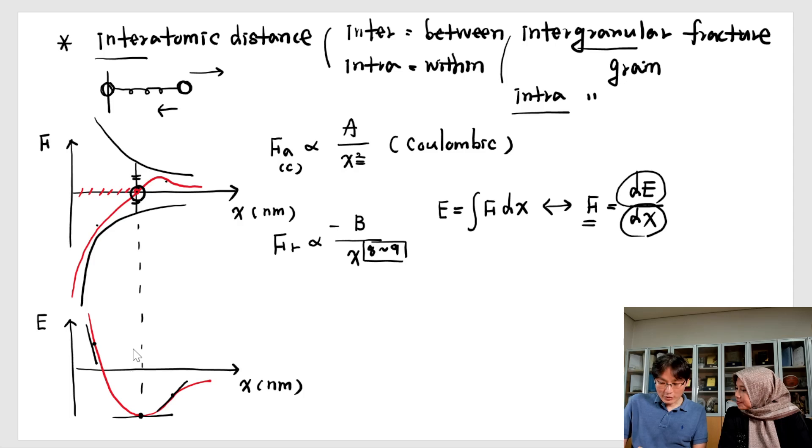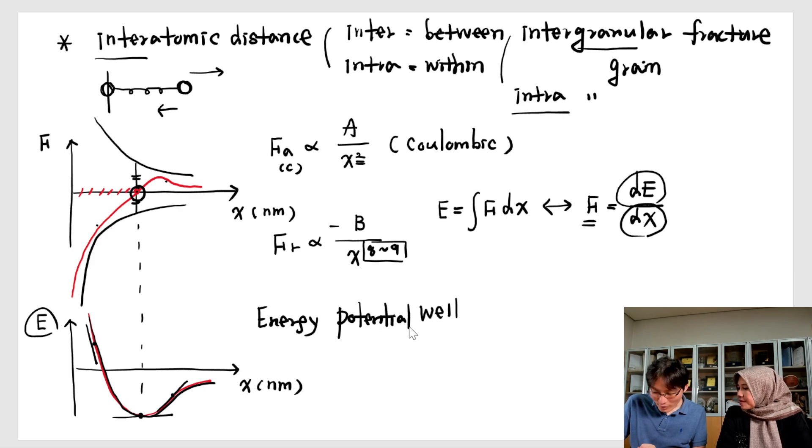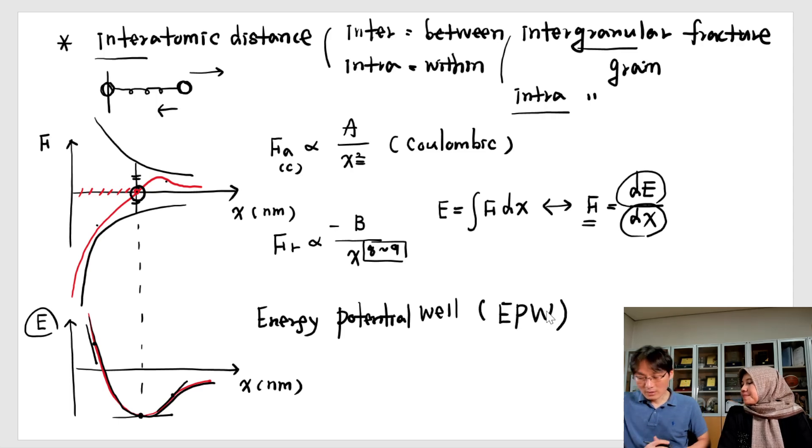So this is very interesting. This looks like some spring or well. That's why we just say this is a well. What kind of well? It's energy. So energy, potential energy. Potential energy well. So simply we say EPW. EPW is very important concept. Why? From this concept we can derive basic properties such as elastic modulus.